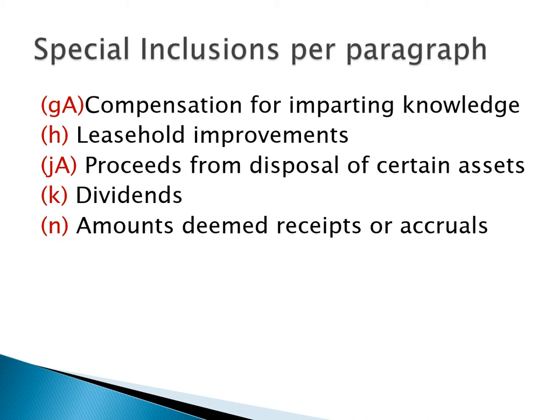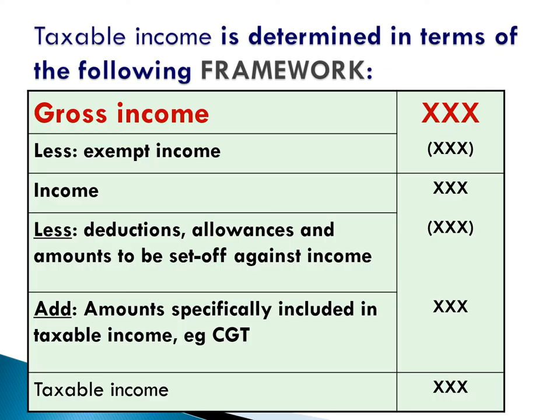We will discuss each of these paragraphs in detail. Let's first have a look at the tax framework again. We are still busy with gross income, because Special Inclusions, as contained in Section 9 of the Income Tax Act, will also be included in gross income. Please take note that you don't have a separate line item called Special Inclusions — it is just included under gross income. They are special inclusions into gross income.